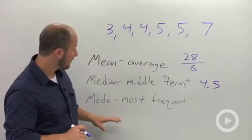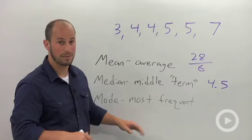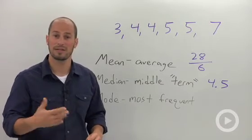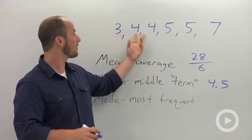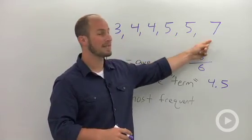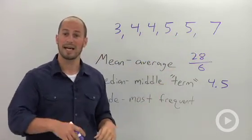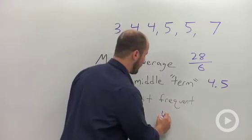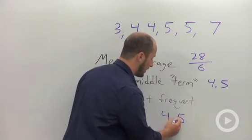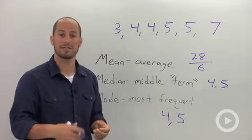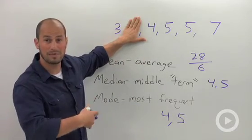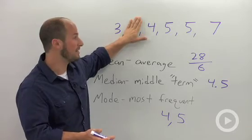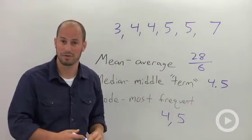The last thing that we refer to is called the mode, which is just going to be the number that occurs the most frequently. So 3 occurs once, 4 occurs twice, 5 occurs twice, 7 occurs once. So in this case, I actually have 2 modes. I have both 4 and 5. If there was just 1, say this 4 wasn't here, then I would have 2 fives and 1 of everything else, then my mode would be 5. It's the number that occurs the most frequently.